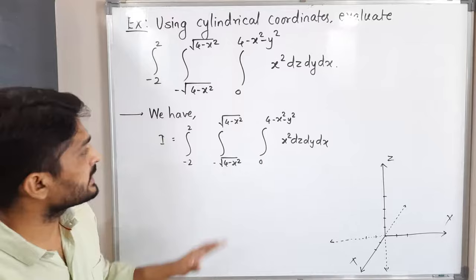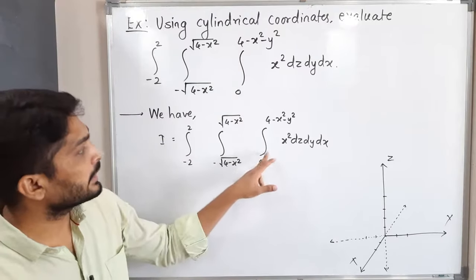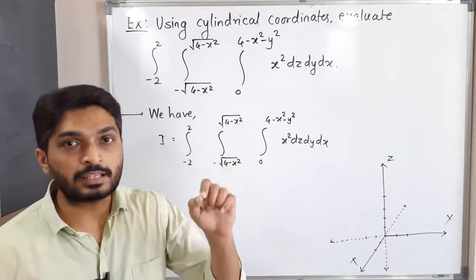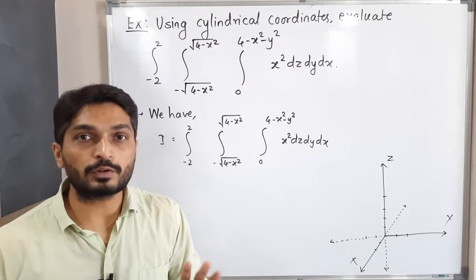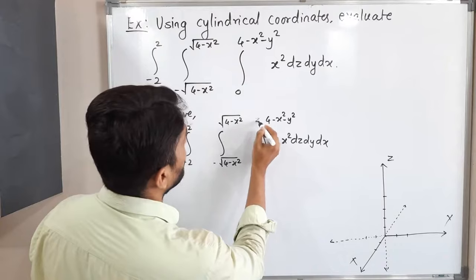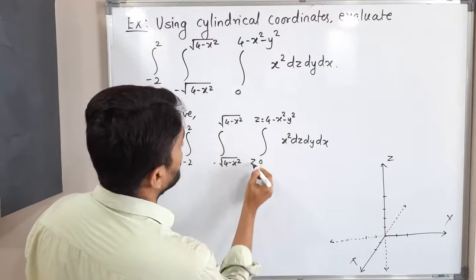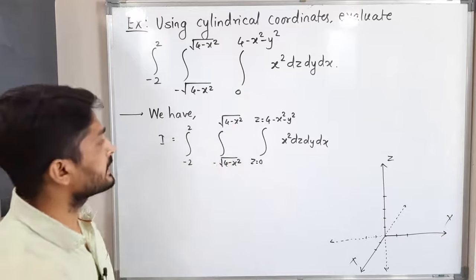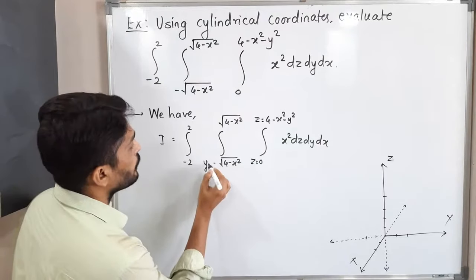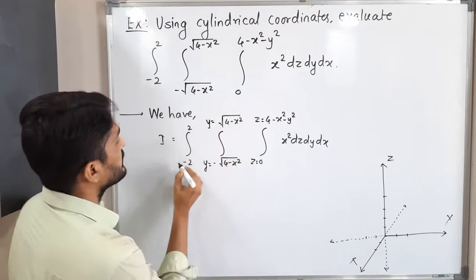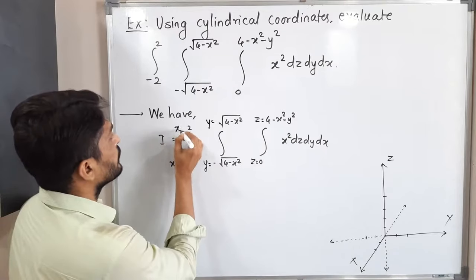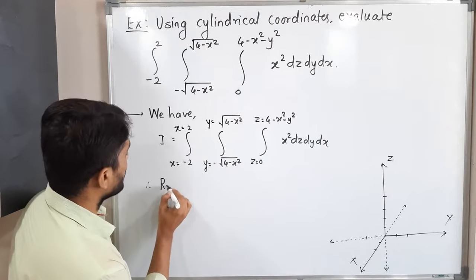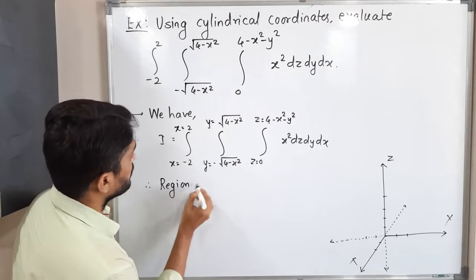Let us find the region and then solve. Looking at the given integral, the inner integration has limits involving x² and y², which are functions of x and y — so those are limits of z. The middle integration limits involve x, so those are limits of y. And the outer integration is with respect to x.